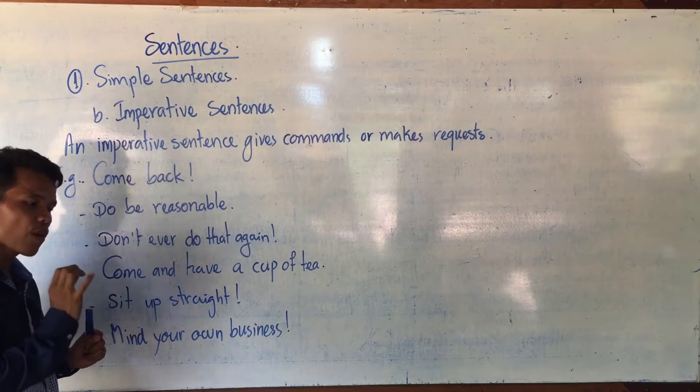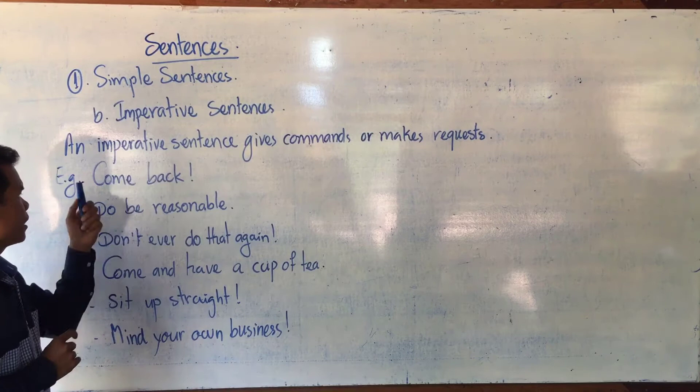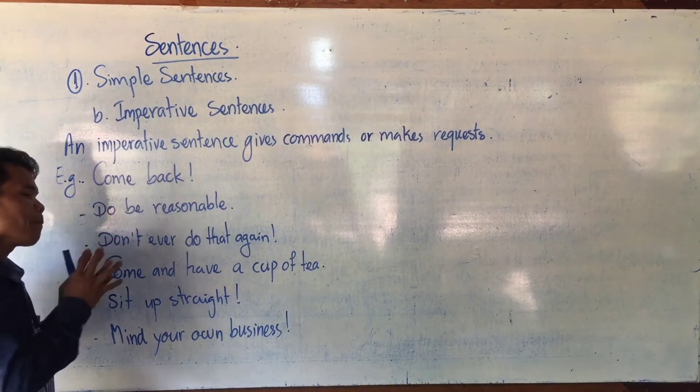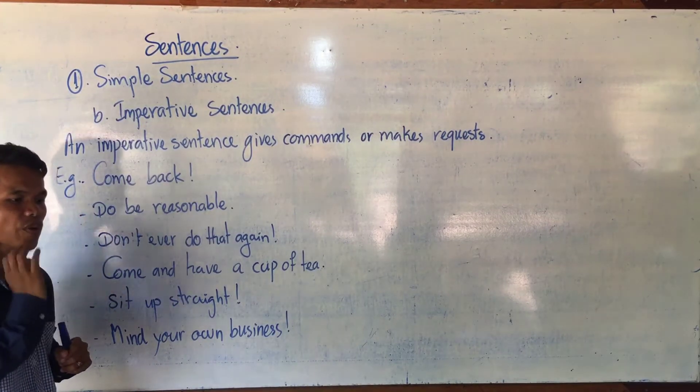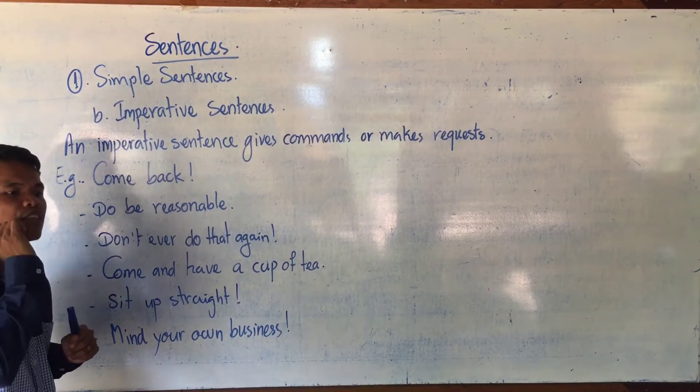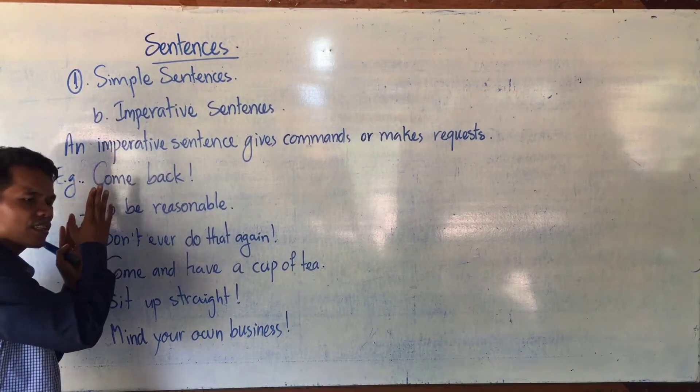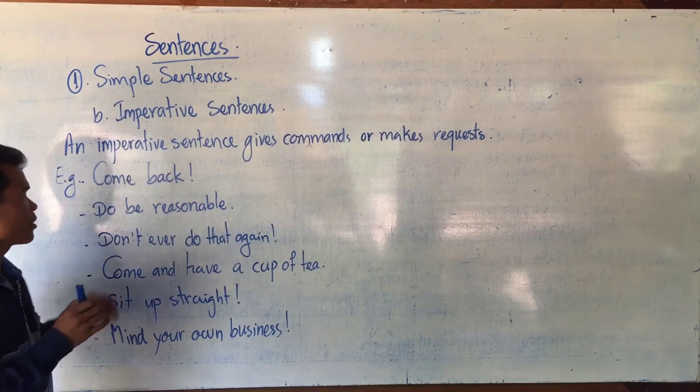In imperative, someone orders somebody to do something. Where is subject? Where is subject? In imperative sentences, we already know that subject is you. So you is deleted. It is called hidden subject.